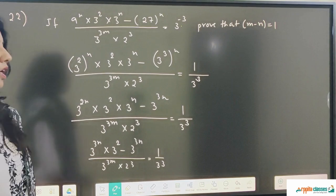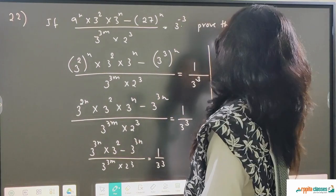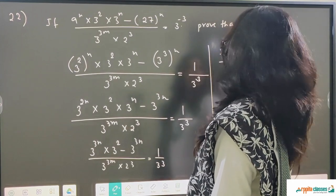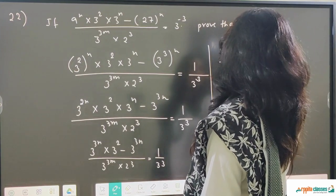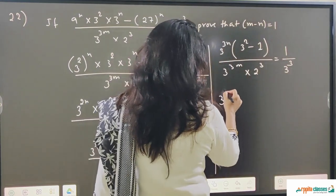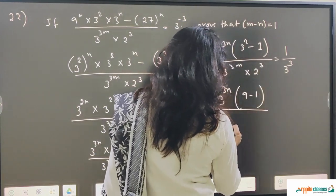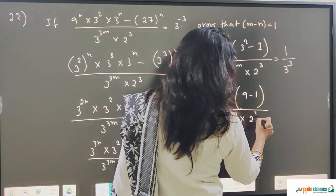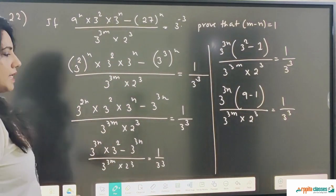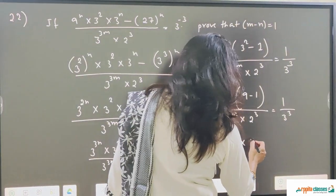We can take 3 to the power 3n common from the numerator. So if I take 3 to the power 3n common, this will be 3 squared minus 1, divided by 3 to the power 3m into 2 cubed, equal to 1 upon 3 cubed. So this gives 3 to the power 3n into 9 minus 1, divided by 3 to the power 3m into 2 cubed, equals 1 upon 3 cubed. 9 minus 1 is 8.